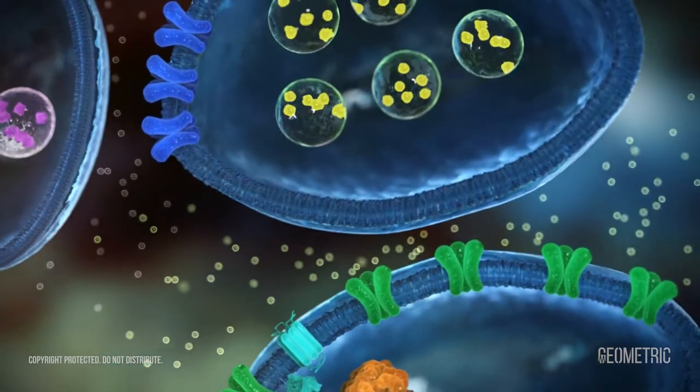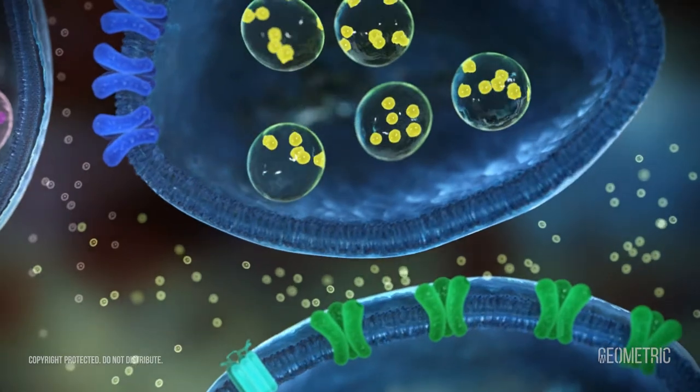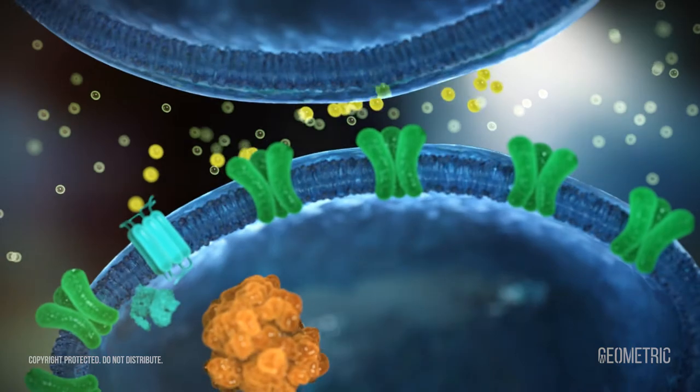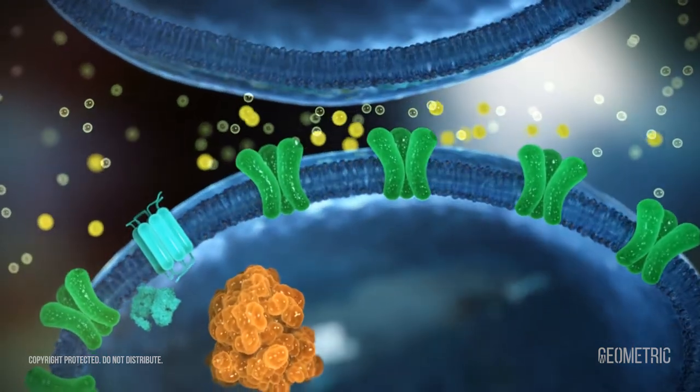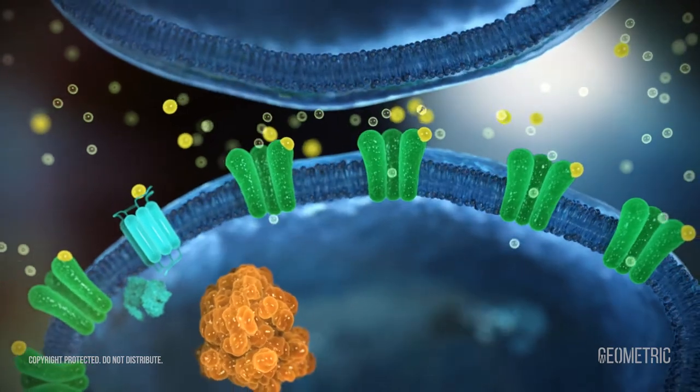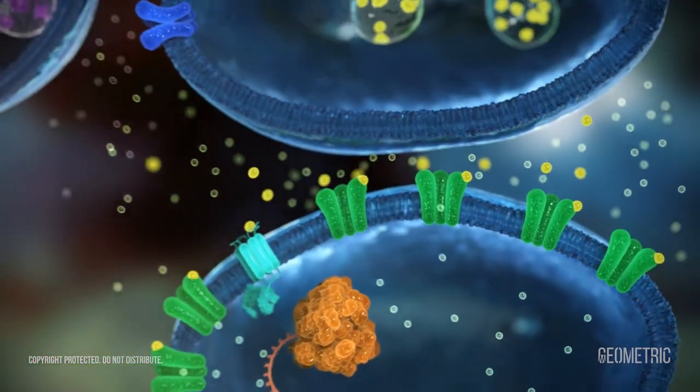Excitatory synaptic transmission requires release of a sufficient number of glutamate molecules from the presynaptic terminal. In addition, a sufficient number of AMPA and NMDA receptors must be present on the postsynaptic cell membrane and activated to produce excitation.